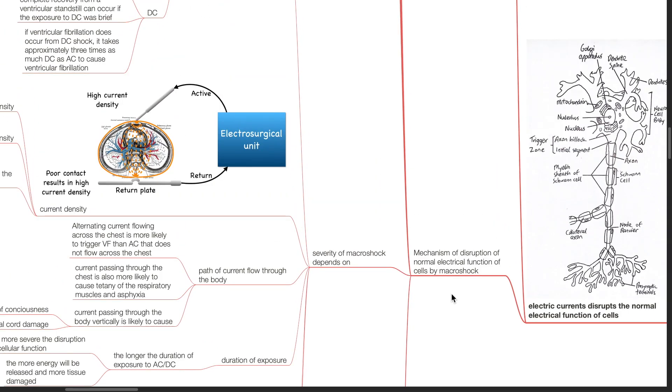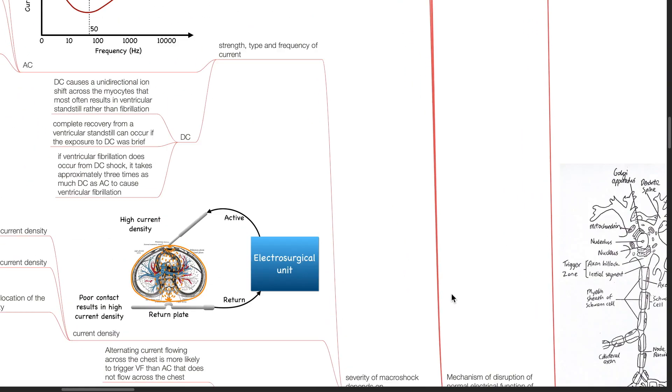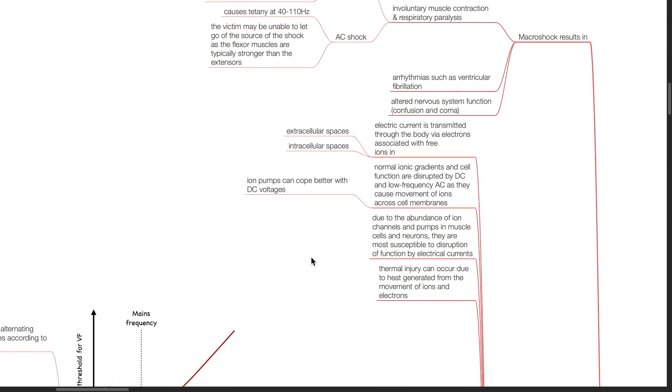Mechanism of disruption of normal electrical function of cells by macroshock. Electric current is transmitted through the body via electrons associated with free ions in extracellular and intracellular spaces. Normal ionic gradients and cell functions are disrupted by DC and low-frequency AC, as they cause movement of ions across cell membranes. Ion pumps can cope better with DC voltages compared to AC voltages. Due to the abundance of ion channels and pumps in muscle cells and neurons, they are most susceptible to disruption of function by electrical currents. Thermal injury can occur due to the heat generated from the movement of ions and electrons.